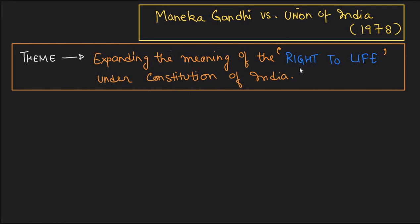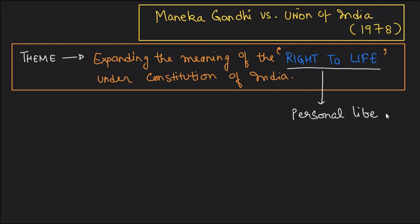Right to life also includes the right to health and the right to marry the partner of your own choice. This is because the Supreme Court has expanded the meaning of right to life over the years, and so many other rights have become part of it. Right to life along with personal liberty are under Article 21 of the Constitution.